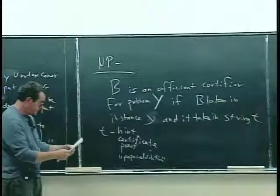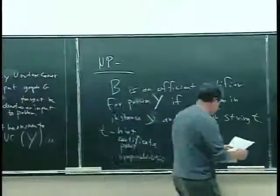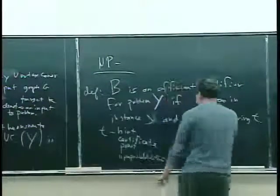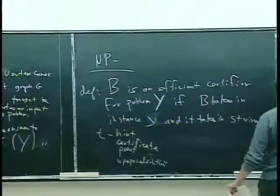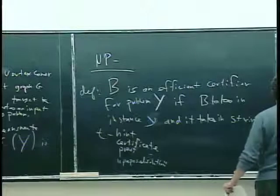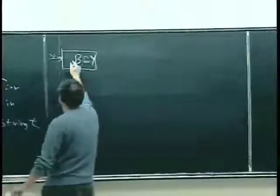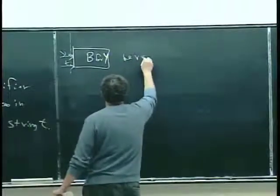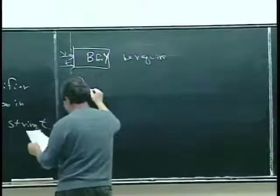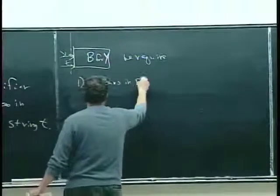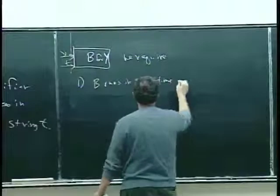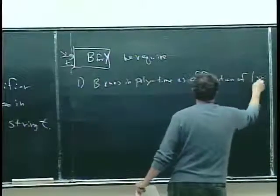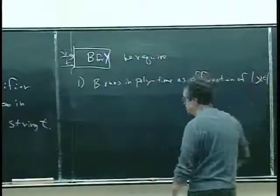So we're still defining what it means to be an efficient certifier. B takes in instances of problem Y and also this extra string. What we require of B are several things. One: B runs in polynomial time as a function of the length of the input y and t.